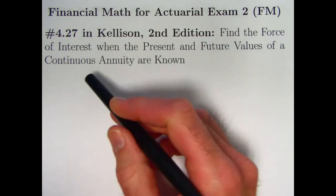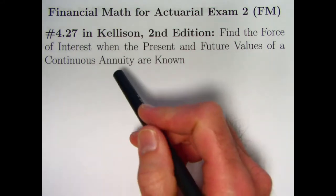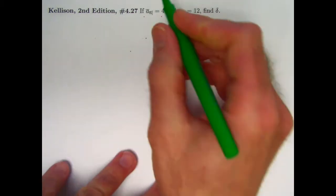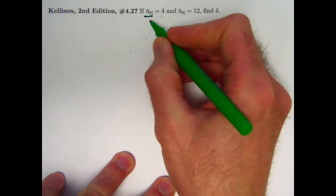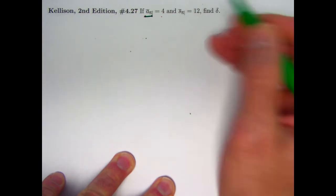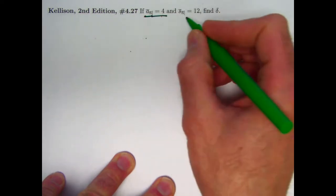The goal here is to find the force of interest, delta, when the present and future values of a continuous annuity are known. Very short problem statement here. If the present value of a continuous annuity paid over n years, n units of time—I'm going to assume time is in years even though it doesn't say it here—if that present value is 4,